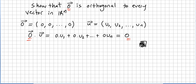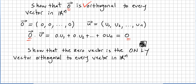There is a totally different question here. If we are asked to show that zero is the only vector orthogonal to every vector in R^n — that is a totally different thing. So the question is: show that the zero vector is the only vector orthogonal to every vector in R^n.